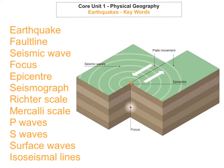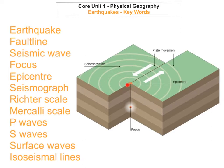The next keyword is the focus. The focus is the place where the earthquake actually starts and it's below the Earth's surface — within the crust. The next keyword is the epicenter. The epicenter is the point on the surface directly above the focus, and it's where the tremors first reach the surface and where the earthquake is the strongest.